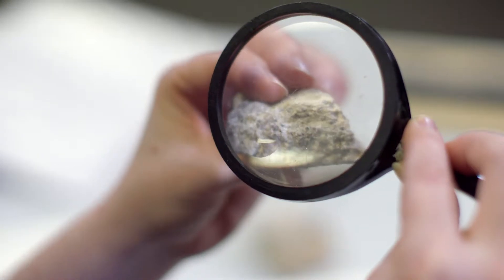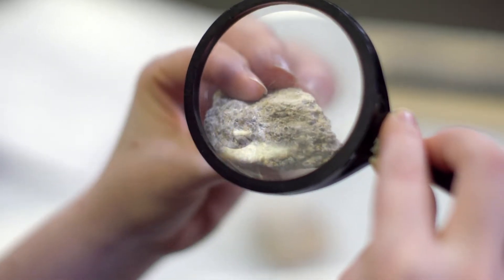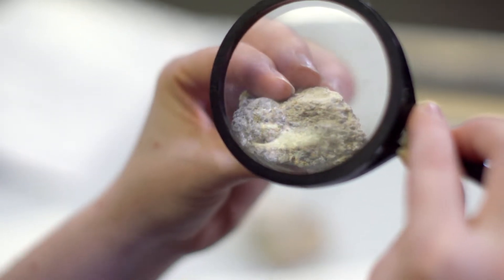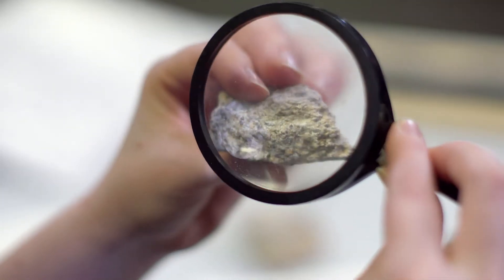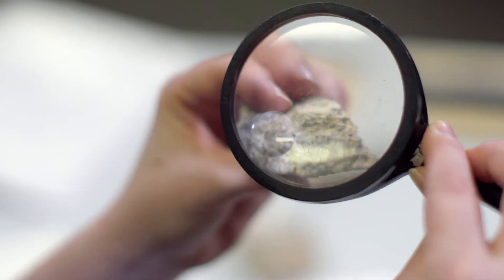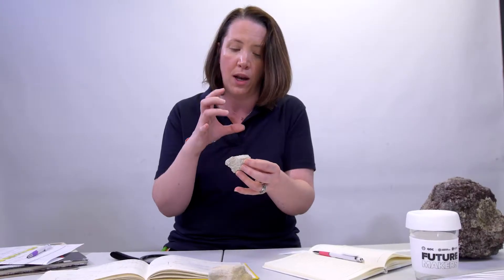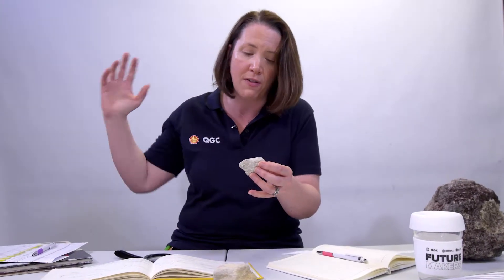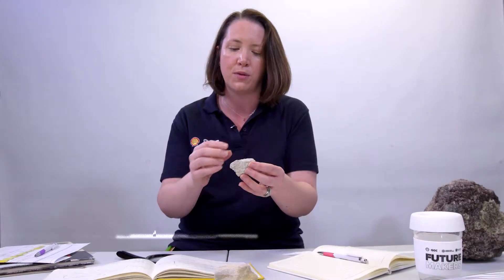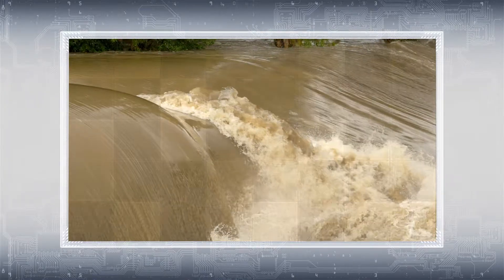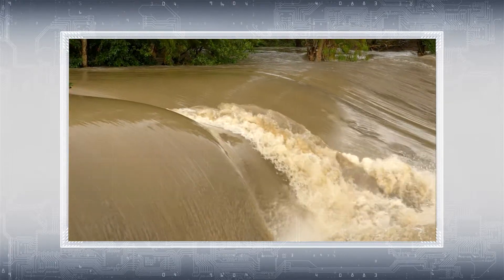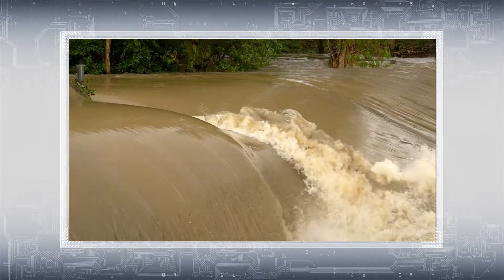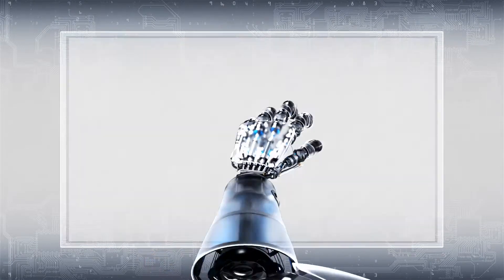Now we're going to have a look at three different types of sedimentary rock. Looking at this first one, I can see some pretty big grains, which tells me an awful lot about this rock — it must have been deposited in a high-energy environment because the only way you can transport large particles is if you've got enough energy in the system to move them. This was most likely deposited in a flood event with lots of high-energy water, and this rock is called a conglomerate.